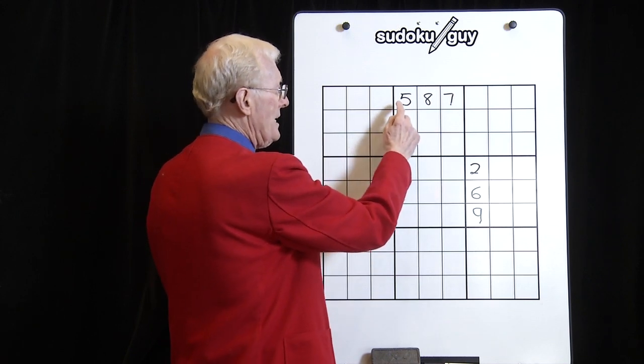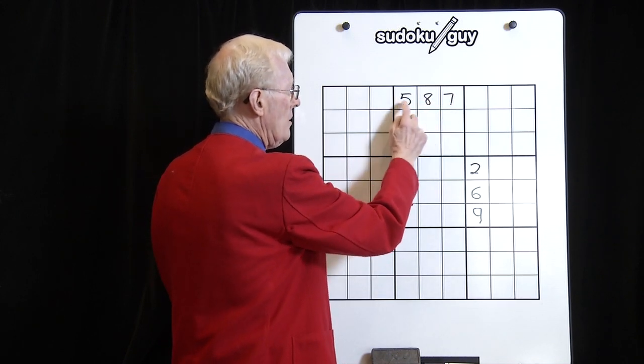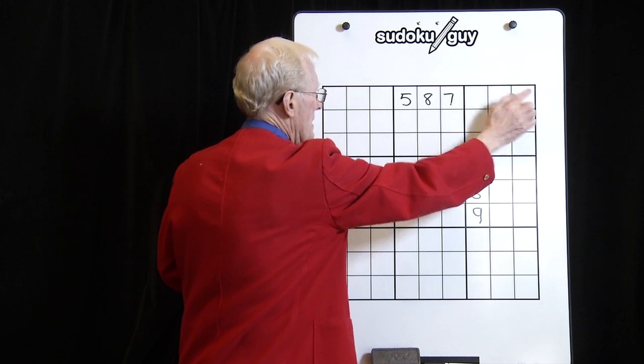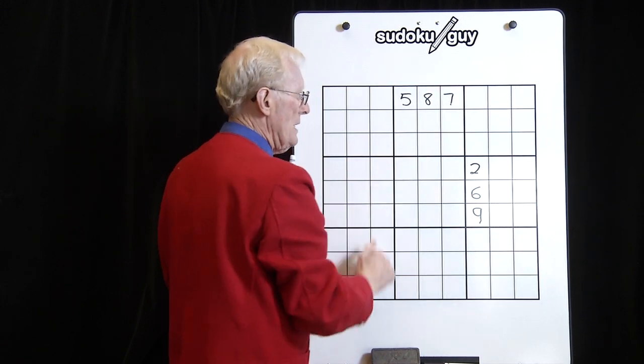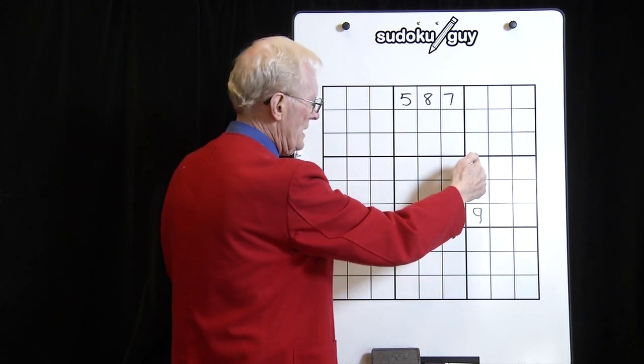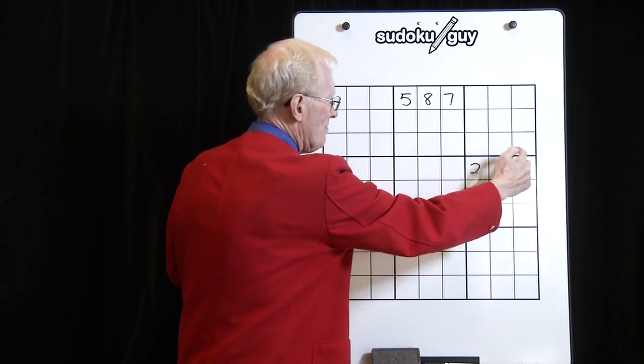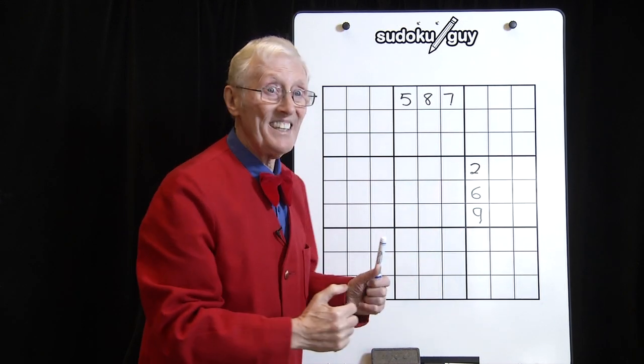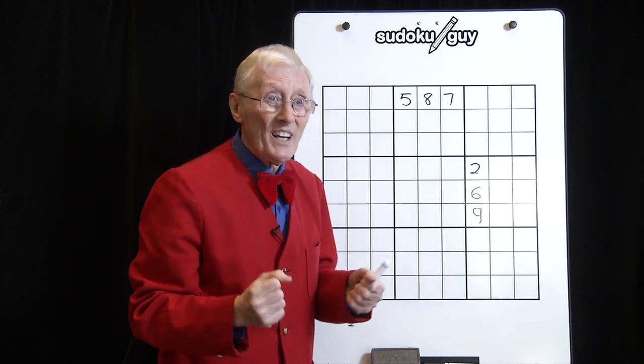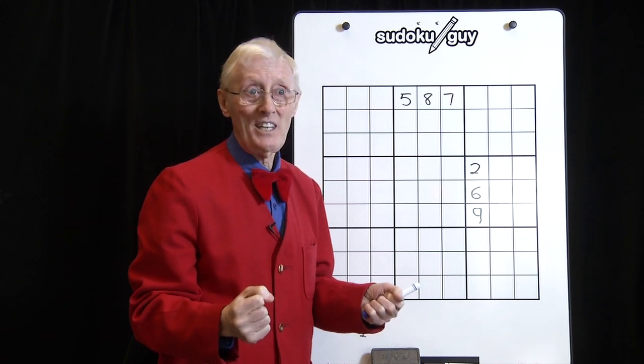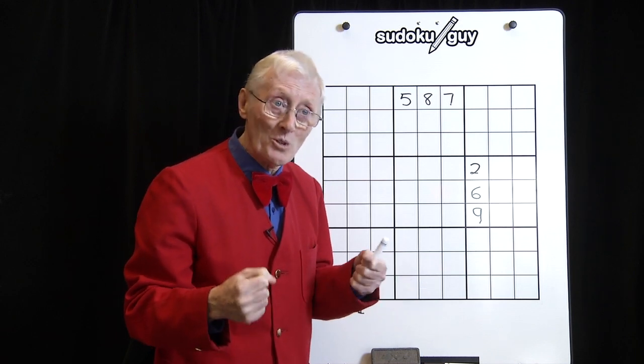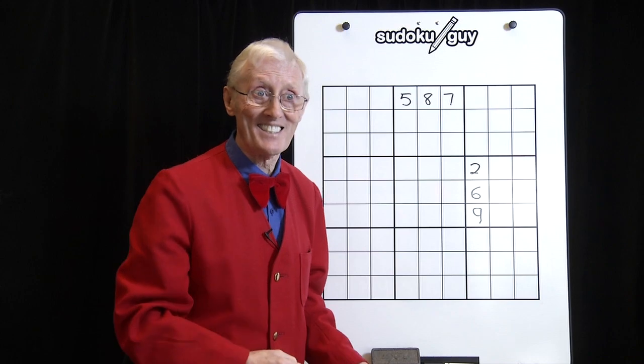In this example I've got three numbers all in a row in this row here or in that block. Here we have three numbers all in a column in this block. When you find that in a puzzle, what effect does it have in terms of helping you to solve or making it more difficult to solve? Let's have a look at this.